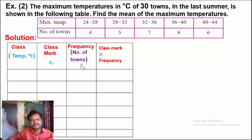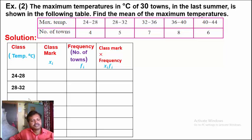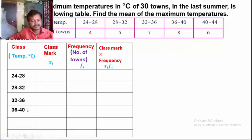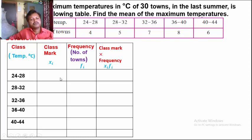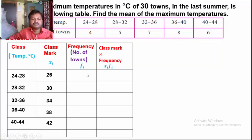The groups of maximum temperature are: 24 to 28, 28 to 32, 32 to 36, 36 to 40, and 40 to 44. Calculate the class marks: (24 + 28) / 2 = 26, then 30, 34, 38, and 42. The number of towns (frequency Fi) are: 4, 5, 7, 8, and 6.